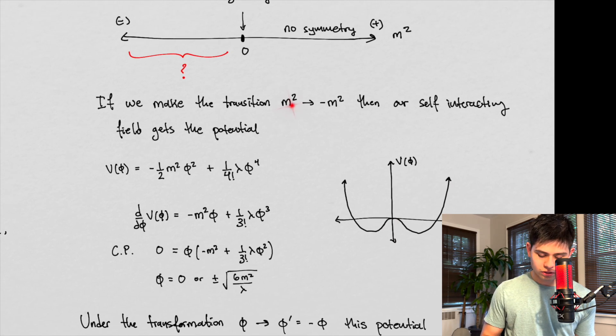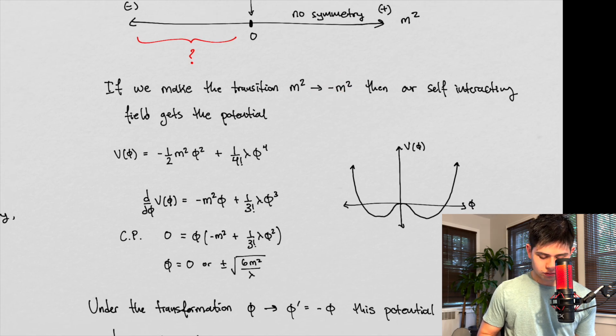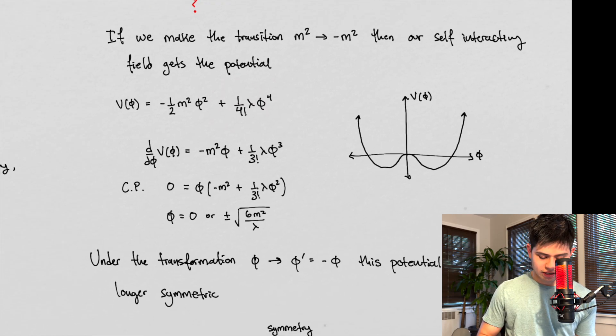So if we make the transition from m squared to negative m squared, then our self-interacting field gets a potential that looks like this. Again, this guy's not really changed that much, right? But what it's going to do is it's going to help us to find something here, because when we take the derivative, right? When we take the derivative, then we find,